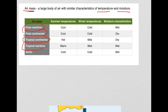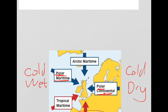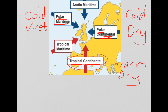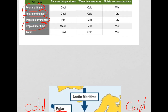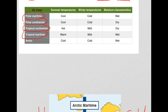The next air mass is tropical maritime. Tropical means warm and maritime means wet. Looking at the conditions: warm in summer, mild in winter, and wet throughout the year.